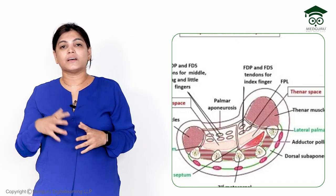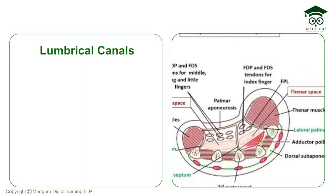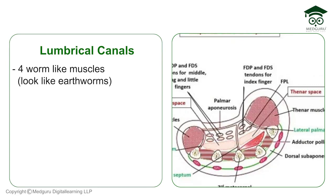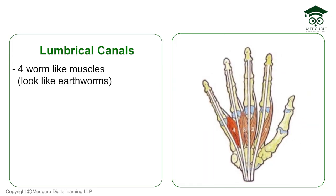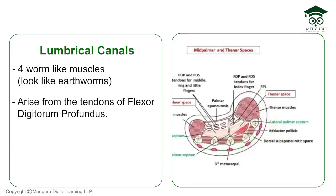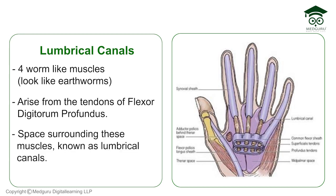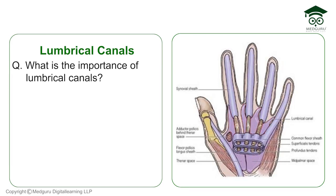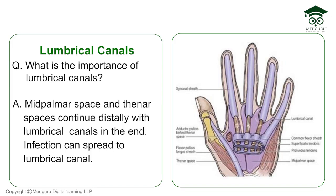Lumbrical canals are easy to understand. There are four lumbrical muscles — small, worm-like muscles that look like earthworms in dissection — originating from the tendons of flexor digitorum profundus. Around each lumbrical muscle there is a space called the lumbrical canal. These spaces become surgically important because both the thenar space and mid palmar space communicate distally with the lumbrical canals, so infection from these palmar spaces can spread through the lumbrical canals.